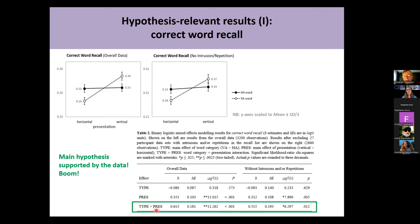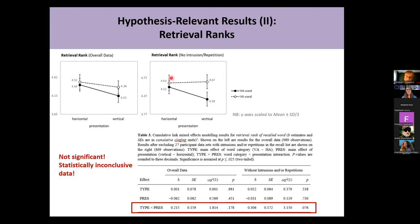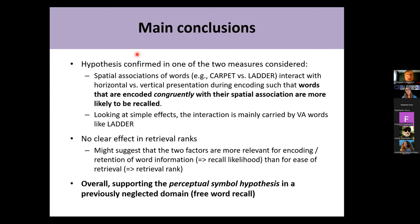This interaction was accompanied by a main effect of presentation: in general, vertically presented words were remembered better than horizontally encoded words. In terms of retrieval rank, although it looks like an interaction when you exclude intrusions and repetitions, we didn't find any significant effects whatsoever. The data are just inconclusive. The error bars are proportionally much wider for retrieval rank than for correct recall, which is why there were no clear effects — the effect came out in likelihood of correct recall.